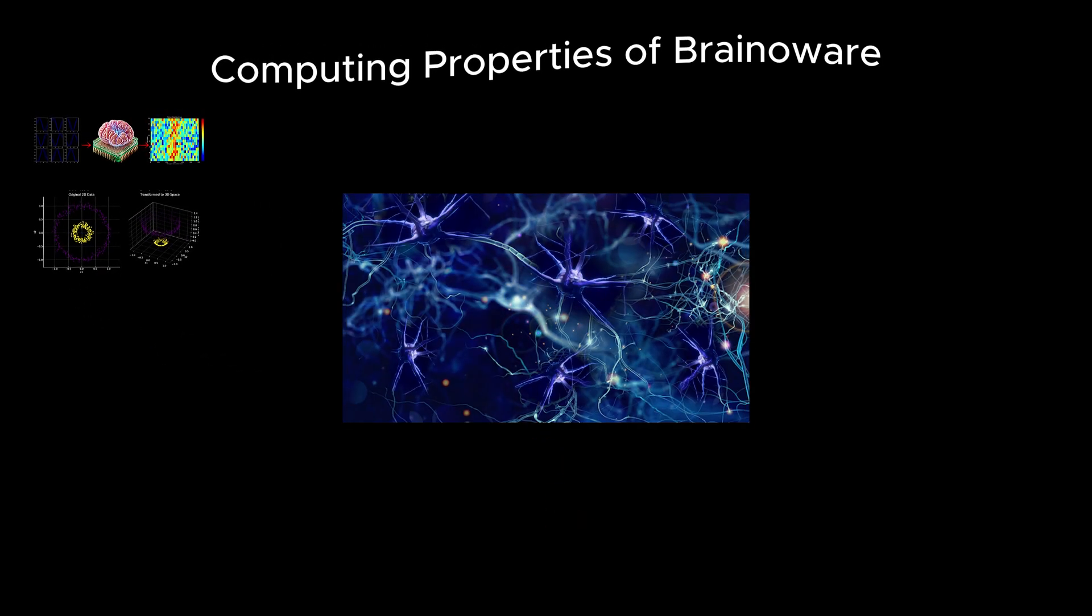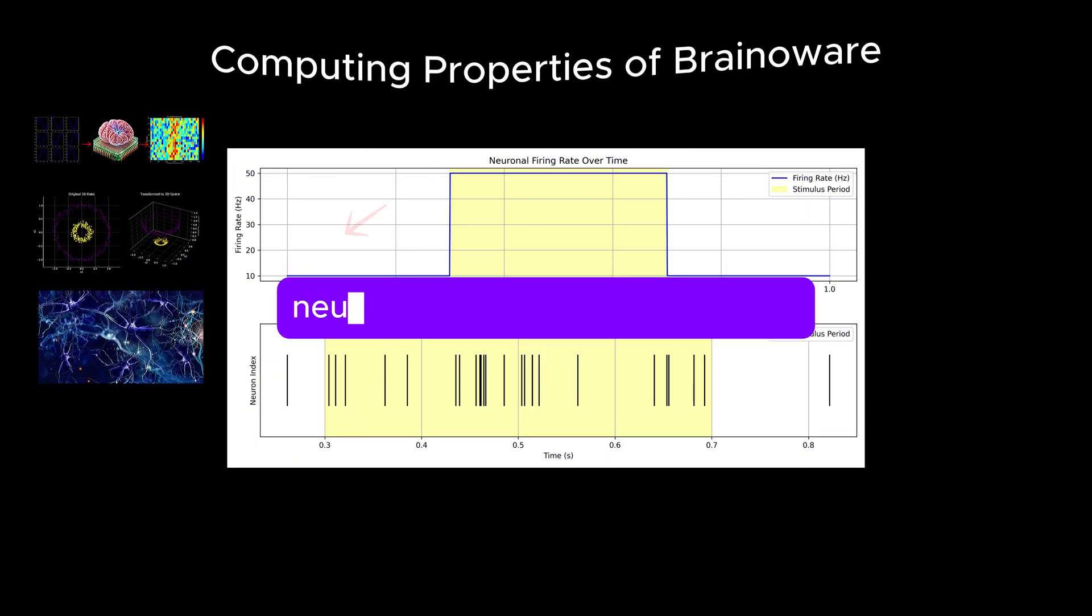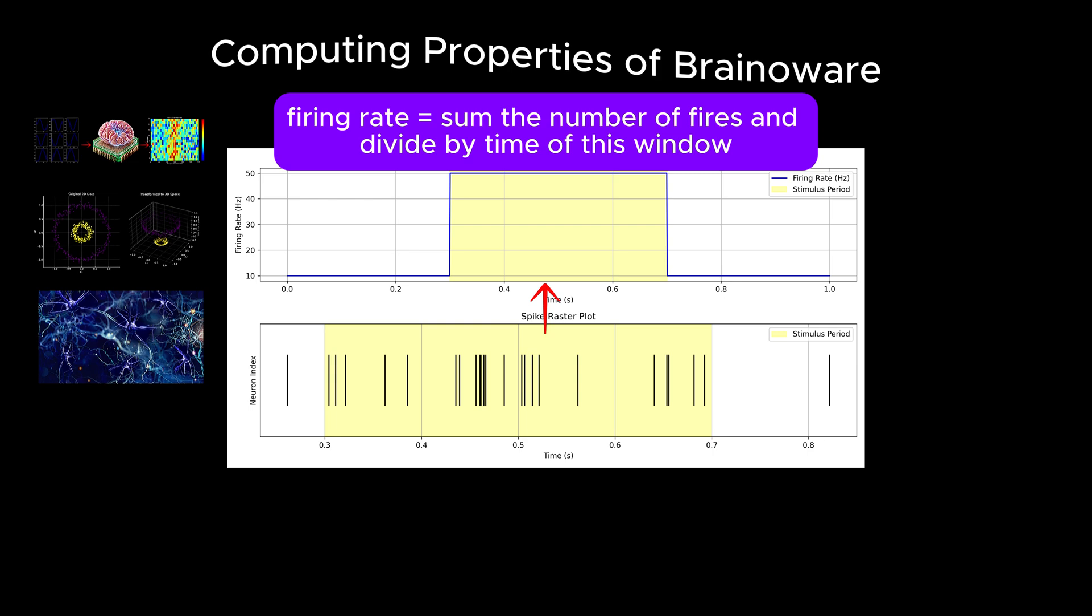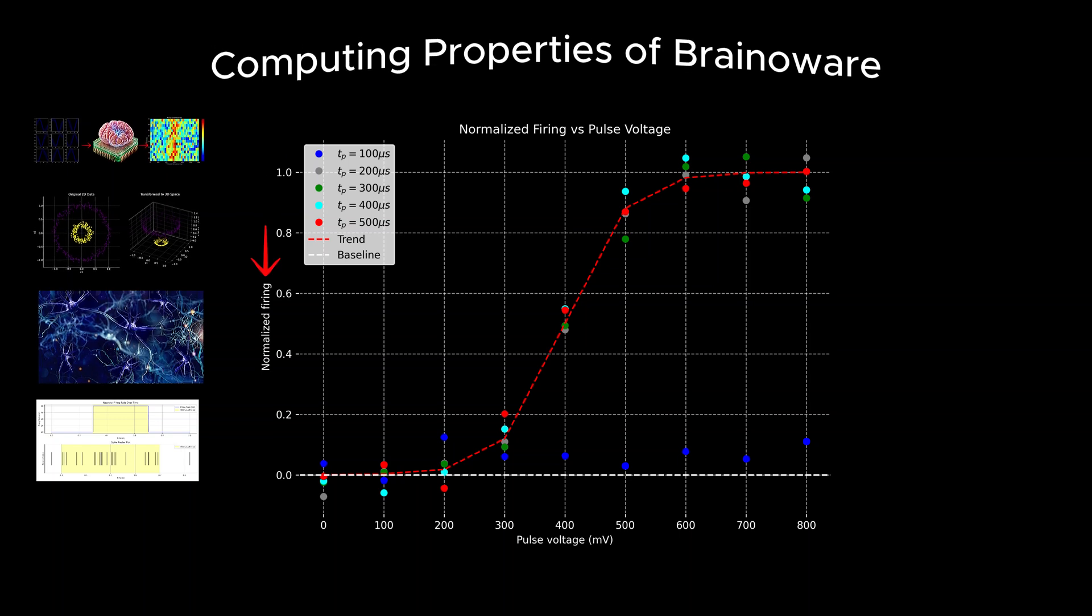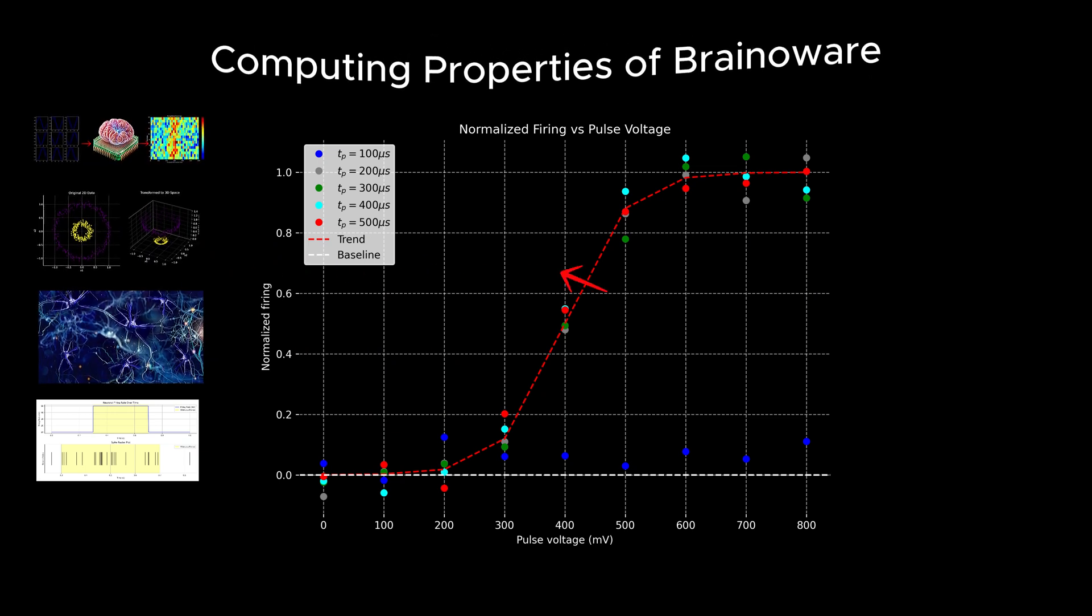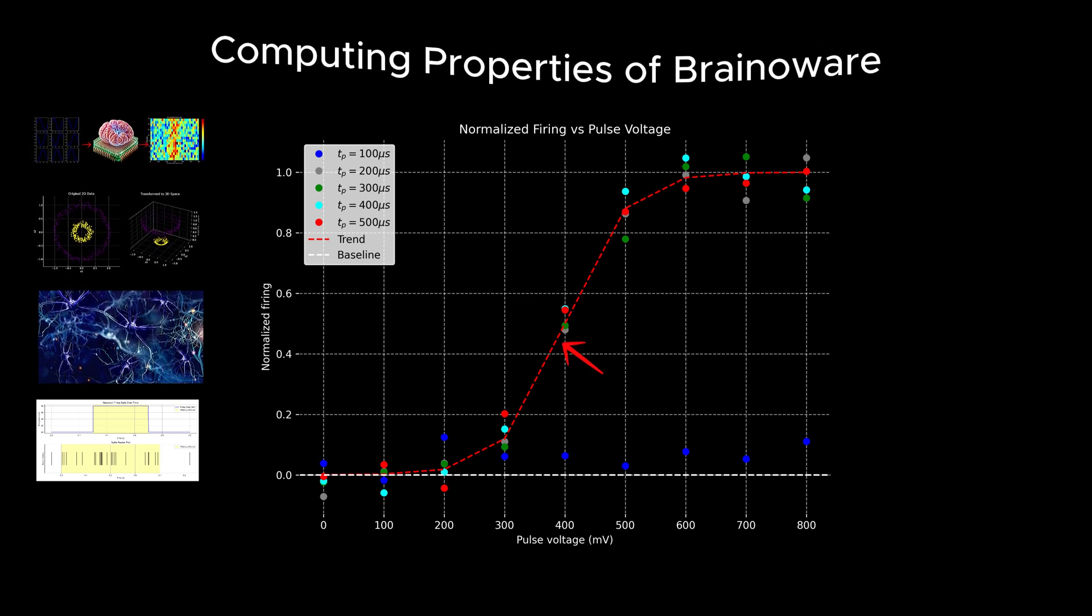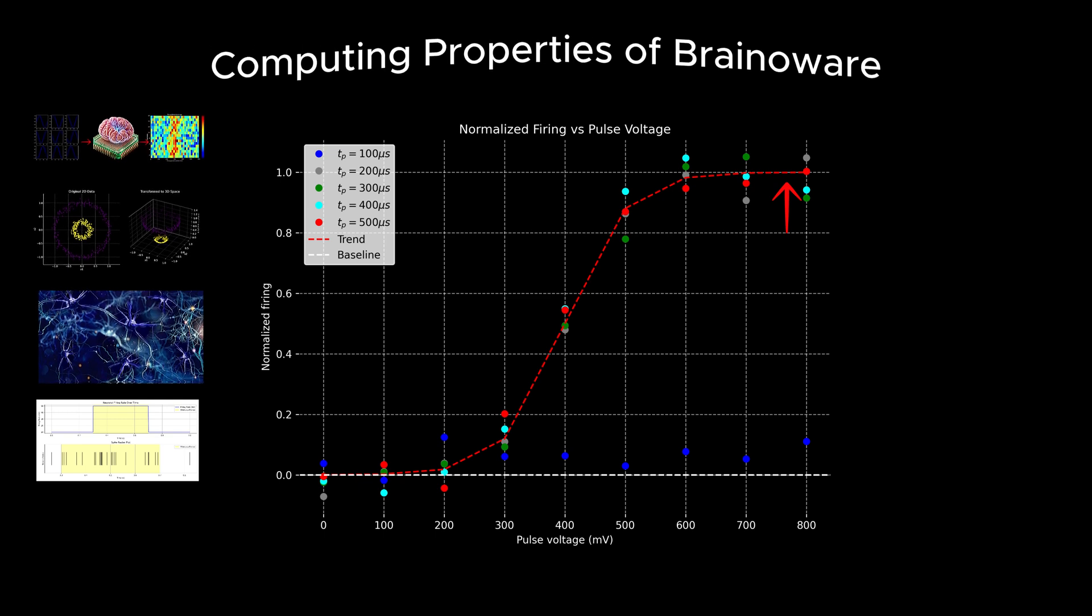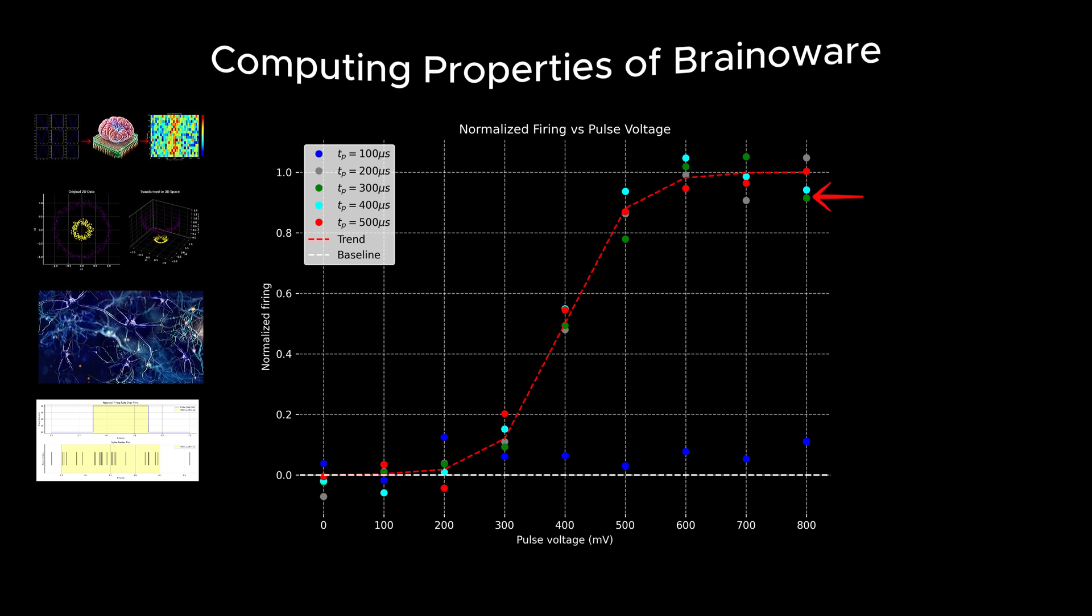To study this, the researchers measured neuronal activity using a metric called the firing rate, which refers to the frequency at which neurons produce electrical signals, known as action potentials, in response to stimuli. Firing rate is the number of fires of a neuron in the yellow window divided by its time. The experiments revealed that the firing rate did not increase in a simple proportional manner with the strength of the input voltage. Instead, it followed a non-linear, sigmoid-like curve, initially showing little change with small voltage pulses, then rising steeply with moderate increases in the input voltage and eventually plateauing at higher voltages. They found that longer and higher amplitude voltage pulses were required to elicit stronger neuronal responses, confirming the presence of non-linear dynamics.